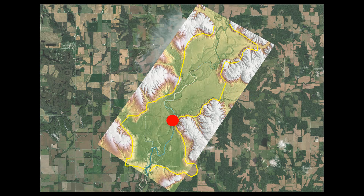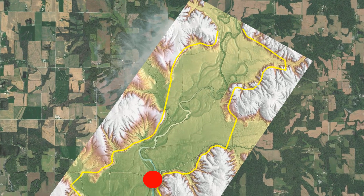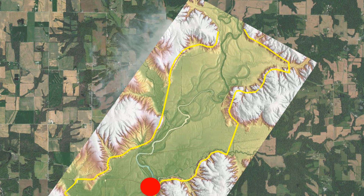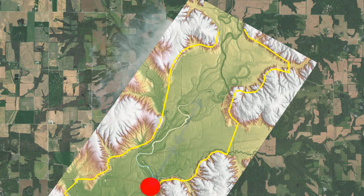Based on this information, the lateral extents could be placed as shown. A coarse model run could confirm if these extents are sufficient. For the upstream extents, two floodplain widths upstream of the bridge area, the floodplain is wide and complex, which is not ideal. A little further upstream, the floodplain narrows and is a more ideal location for the upstream boundary.